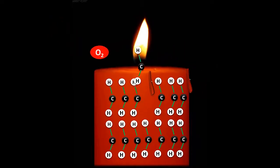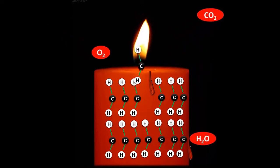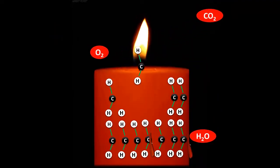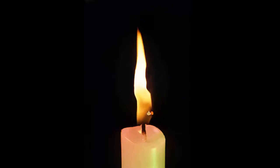Heat generated by this reaction helps to continue this process till all the solid wax changes to vapor state. Both light and heat are continuously evolved in this reaction. Heat from the flame travels in three directions by the processes called conduction, convection, and radiation.